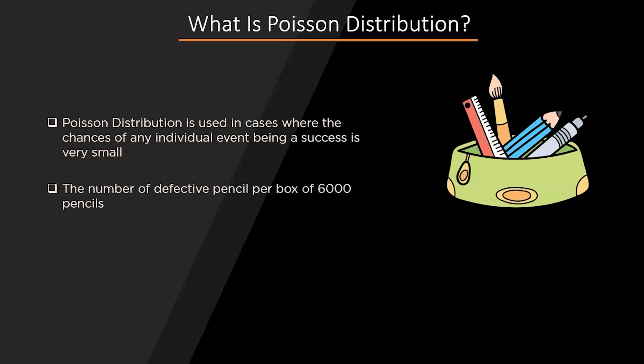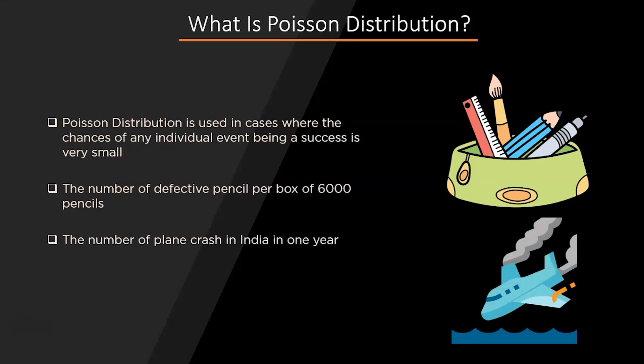For example, the number of defective pencils per box of 6000 pencils, the number of plane crashes in India in one year, or the number of printing mistakes in each page of a book — all of these examples can make use of Poisson distribution.